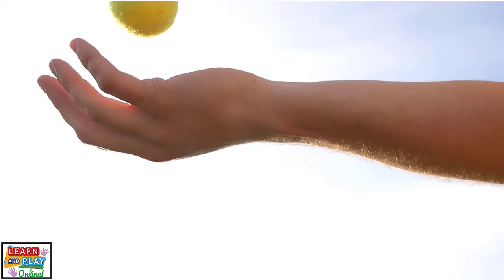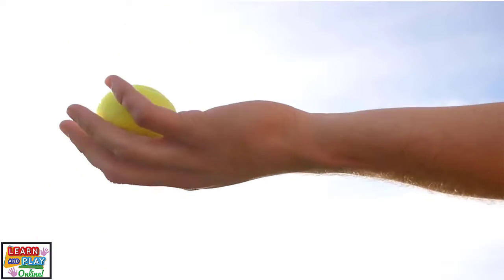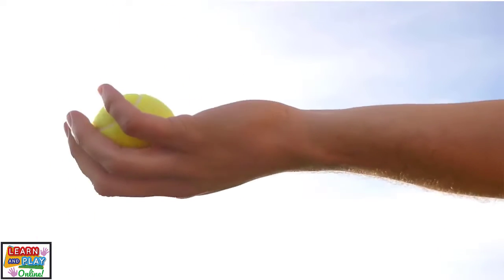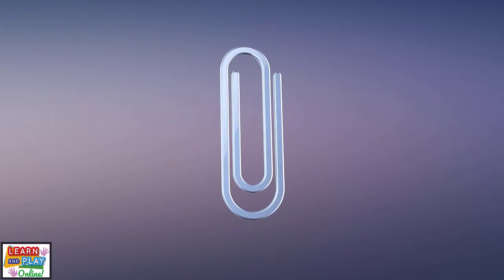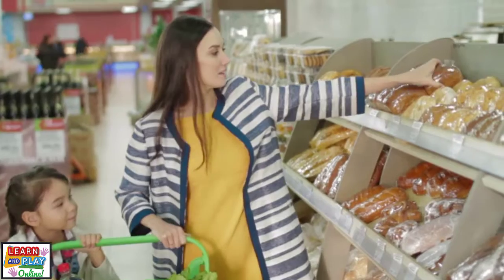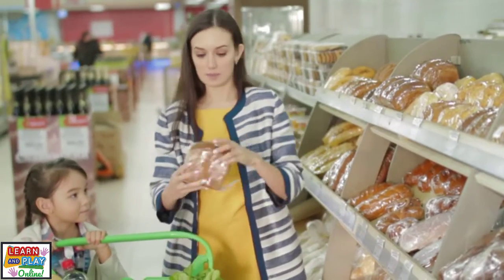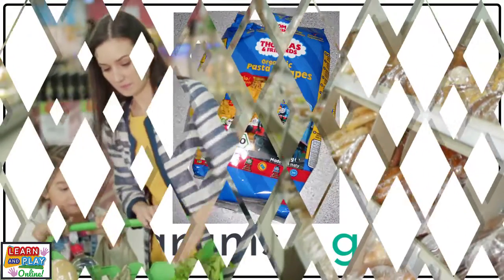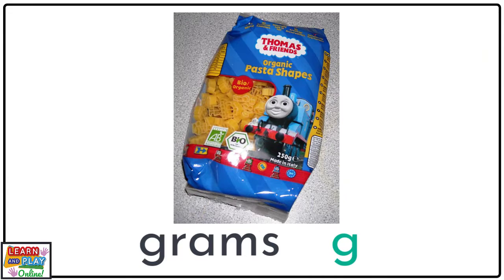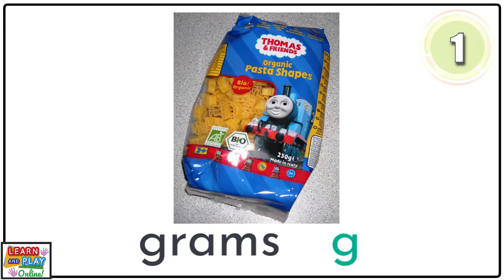Grams are used to measure the mass of very light objects. To give you an idea using real-life examples, a tennis ball weighs around 57 grams, and a paper clip has a mass of around 1 gram. The next time you go to the shops, see if you can locate the mass of different grocery items. Look at this packet of pasta, for example — can you see its mass detailed somewhere on the packaging? This packet of pasta weighs 250 grams.